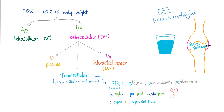In my playlist about fluids, hemodynamics, electrolytes and acid-base disturbance, I've talked about the total body water, intracellular and extracellular fluid. The extracellular is divided into plasma, interstitial space, and transcellular fluid — which means within an epithelium-lined space. Examples of transcellular include the three P's: pleura, pericardium, peritoneum; two lymphs: perilymph and endolymph in your inner ear; and one syno — synovial fluid.